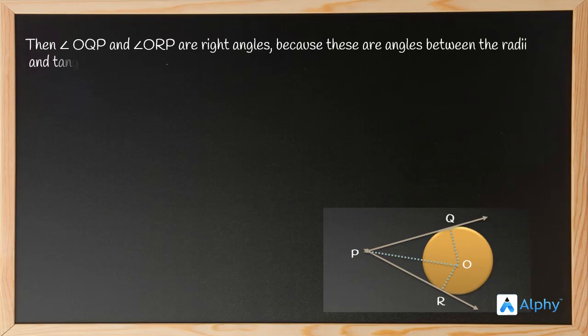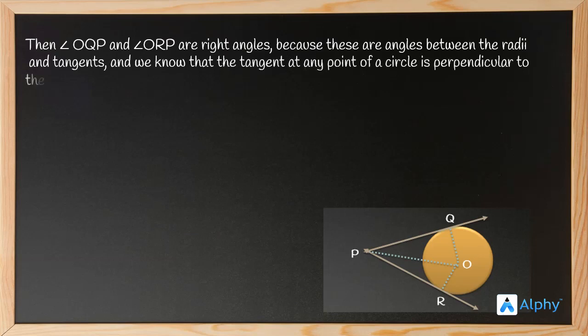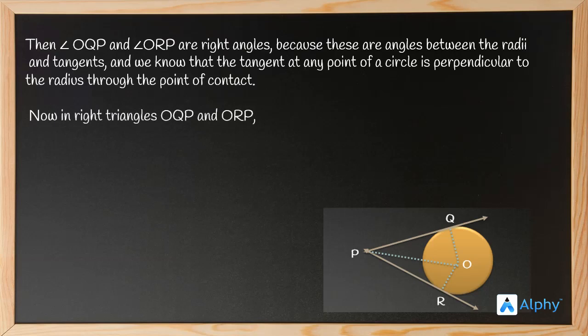We know that the tangent at any point of a circle is perpendicular to the radius through the point of contact. Now, in right triangles OQP and ORP, OQ equals